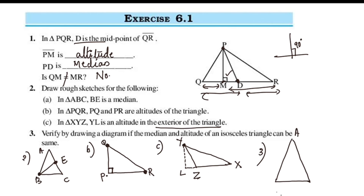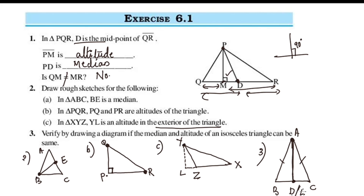This is triangle ABC where AB equals AC — the equal sides of the isosceles triangle. We draw AD, where D is on BC. AD is the median because D is the midpoint of BC, and AD is also the altitude because it is perpendicular to BC. So in an isosceles triangle, the median and altitude are the same.